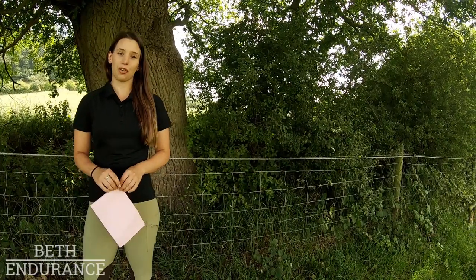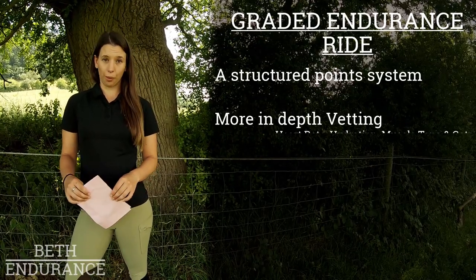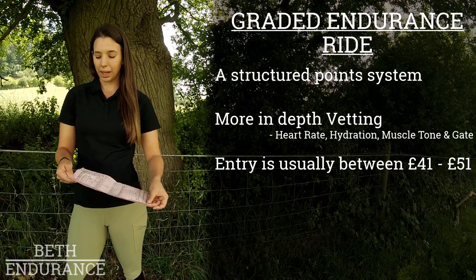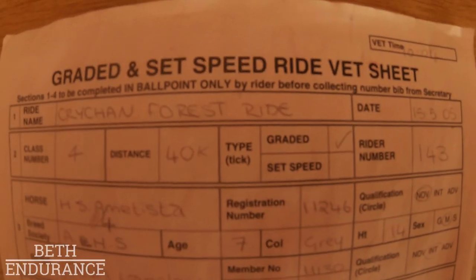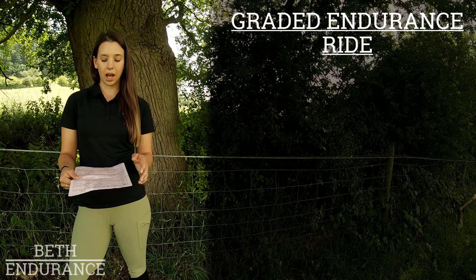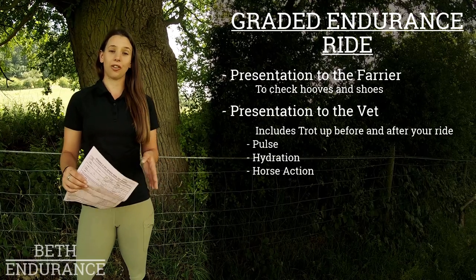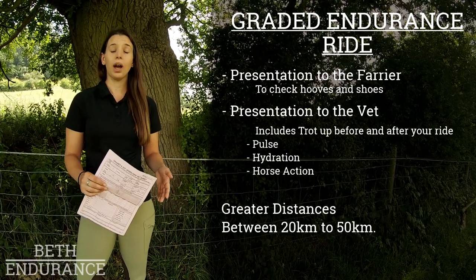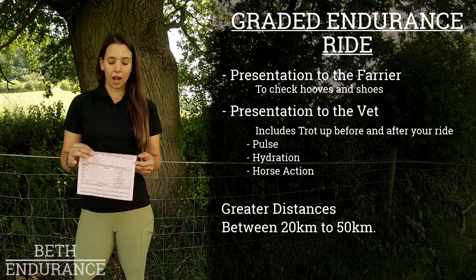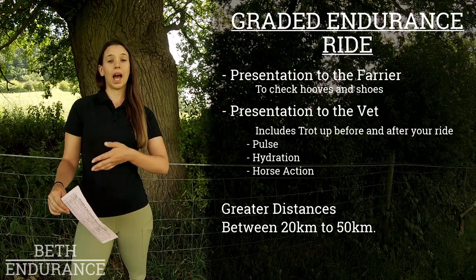The third type of endurance ride you can enter as a beginner is a graded endurance ride. These are slightly more formal. You have a vet sheet — here is a graded ride vet sheet — where you fill in your details and your horse's details and give it to the farrier and vet to complete. The difference between a pleasure and a graded endurance ride is that the vetting is a little more formal and the distances get bigger. They'll take the pulse, check for hydration and the action of your horse, and they do this pre and post ride.